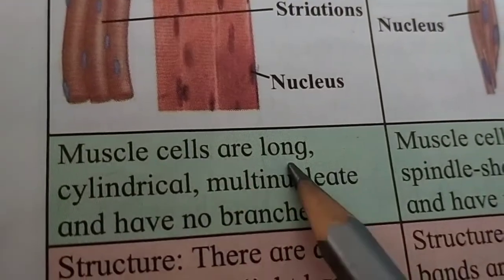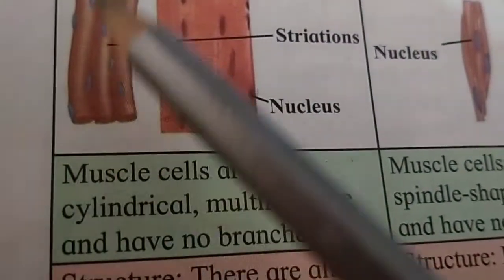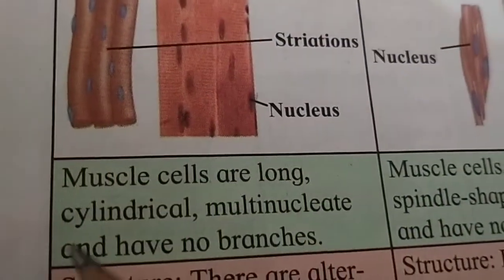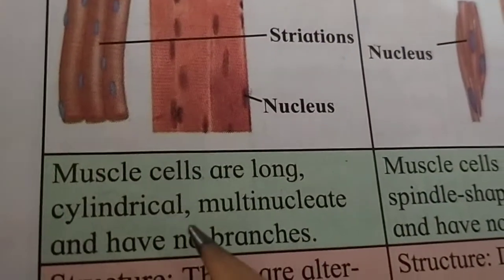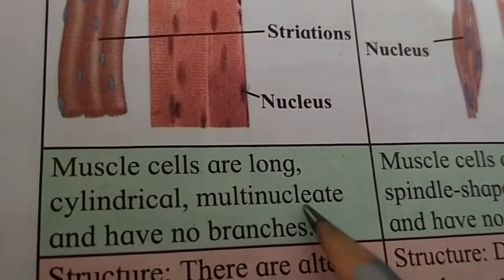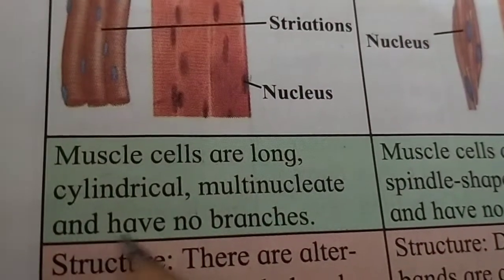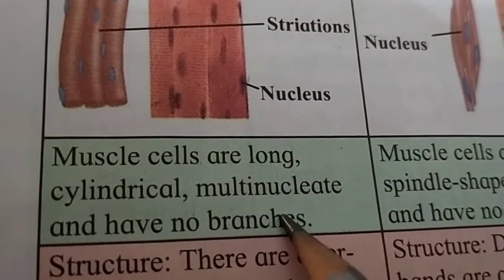The striated muscle cells are long, cylindrical, and multi-nucleated, meaning they have many nuclei. They have no branches.